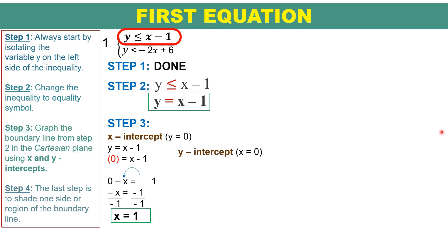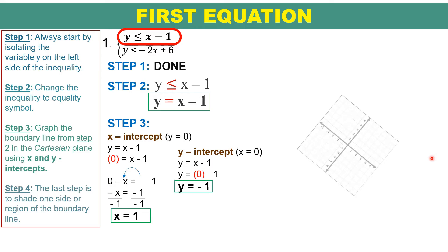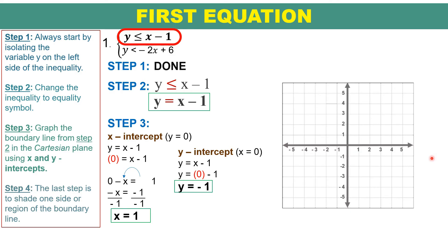Proceed to the y-intercept by changing the value of x into 0. Using y equals x minus 1, remove x and replace it with 0, or simply cancel x. We now have y equals negative 1. Since we already have the x and y-intercepts, we may now graph this inequality.